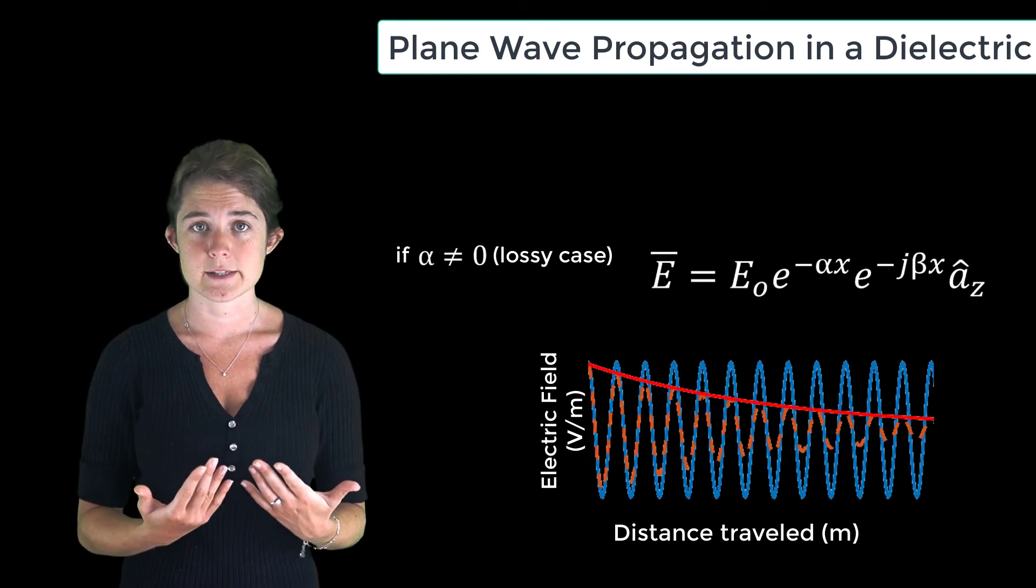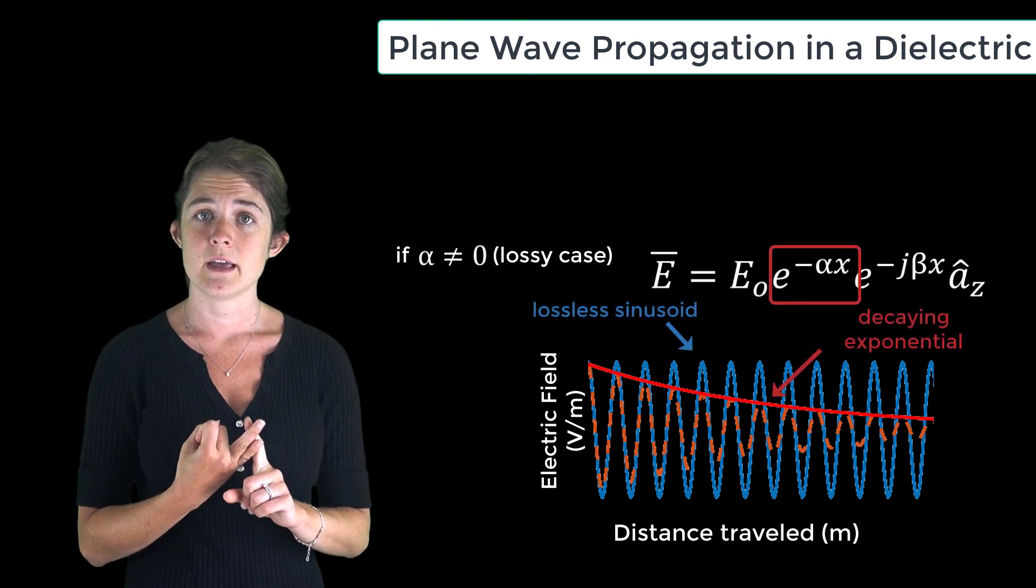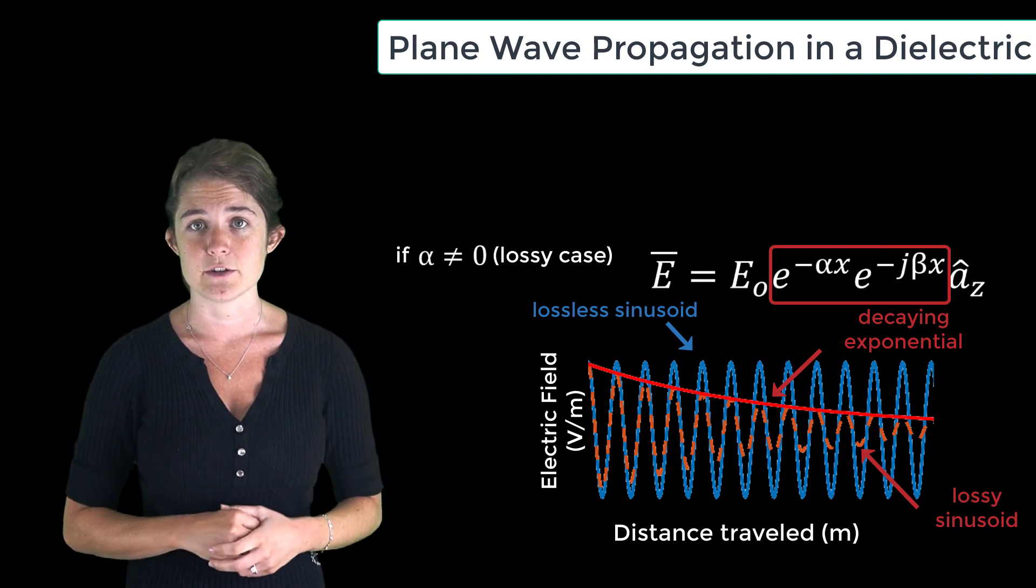Here we can see the three plots: the lossless sinusoid, the decaying exponential, and the lossy sinusoid, which is the product of the other two plots.